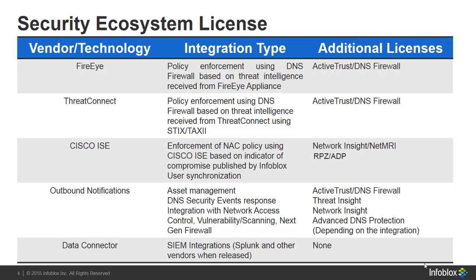This table gives a snippet of all the solutions available with our security ecosystem and the additional licenses required for each of them. With FireEye and Threat Connect, you can enforce policies using the DNS firewall based on the threat intelligence received; this requires the Active Trust and DNS firewall licenses. With Cisco ICE, you can enforce NAC policies based on Indicator of Compromise published by Infoblox, which requires the Network Insight or NetMRI license. With Outbound Notifications, you can perform asset management, respond to DNS security events, and integrate with NAC and next-gen firewall. Depending on the kind of integration, you would need additional licenses.